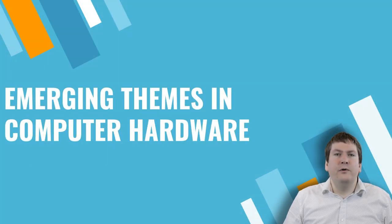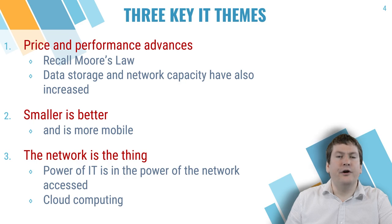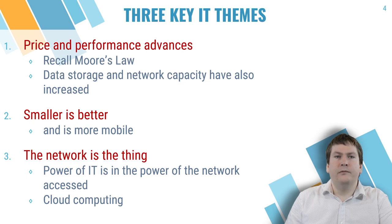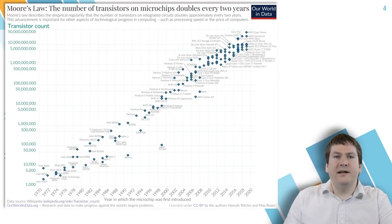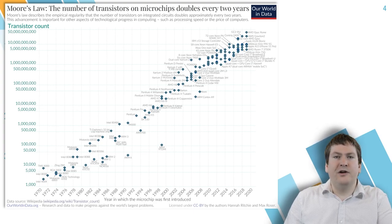Let's start by talking about a few emerging themes in computing hardware. First, price and performance are always advancing — computer hardware gets cheaper over time but also more powerful. Moore's Law states that the number of transistors on a microchip doubles every two years or so, about every 18 to 24 months. In reality this is more of a prediction than a hard rule, but so far it's held true. One thing to note is that in many ways it's a self-fulfilling prophecy — CPU and chip manufacturers use it as a benchmark for their progress and innovation.